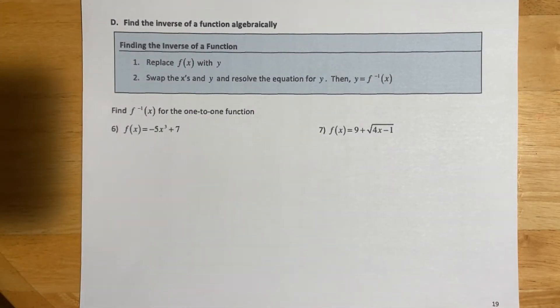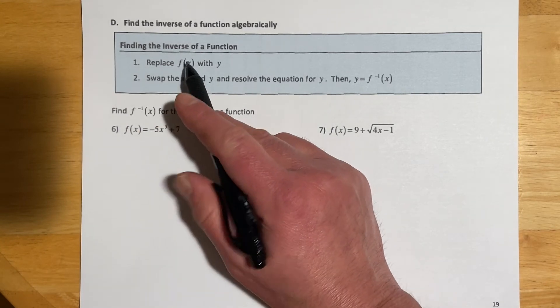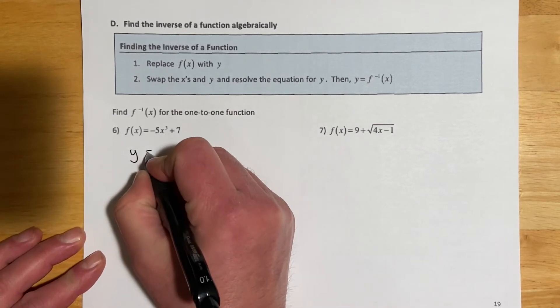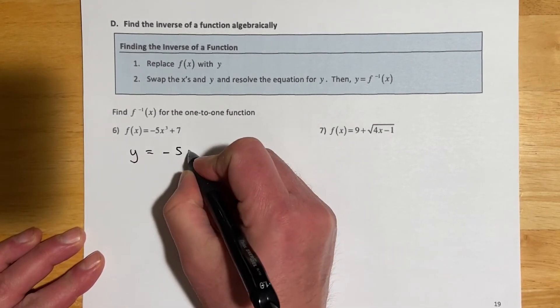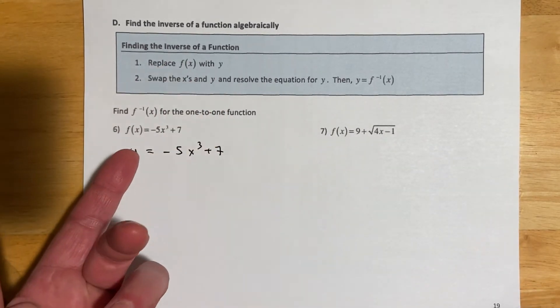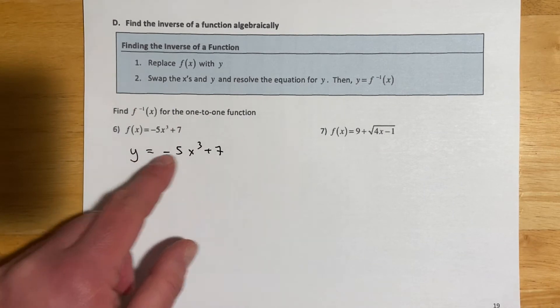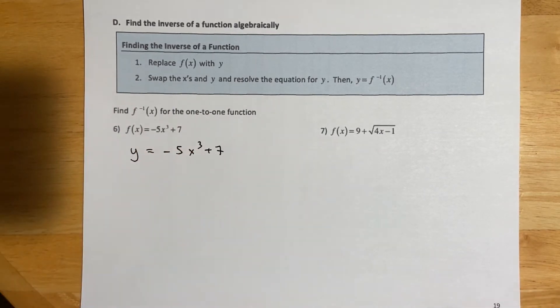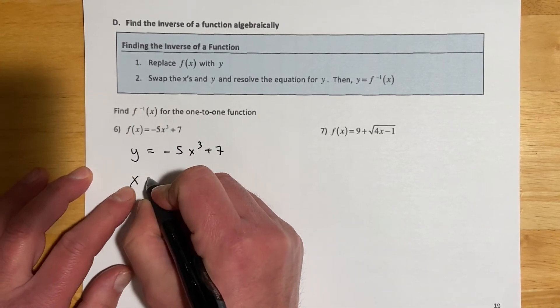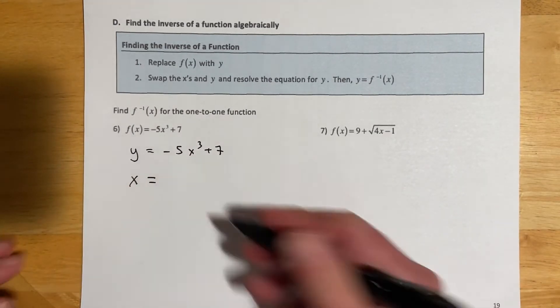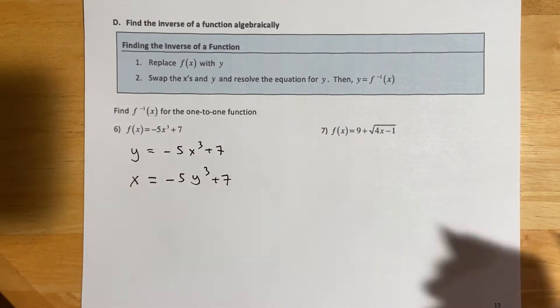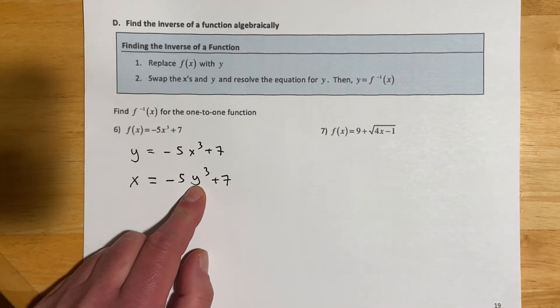To find the inverse of a function algebraically, first thing is if it's written as f of x, just call that y. In this case, I'll just think of this as y equals negative 5x cubed plus 7. The reason for that is the next step is we're going to swap x's and y's. You'll be more comfortable solving for the y as a y rather than f of x or f inverse x. So it's just for convenience. Then we'll swap our x's and y's, because remember that's what this is, the domain and the range are swapped. So negative 5y cubed plus 7. Now we just have to resolve that for y, and then that's our inverse.